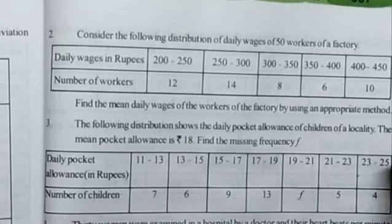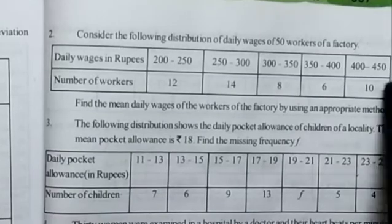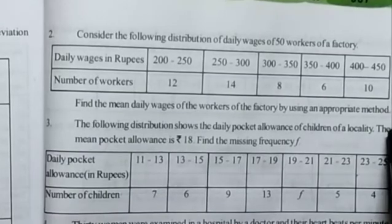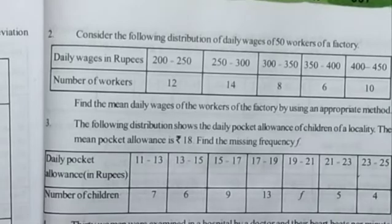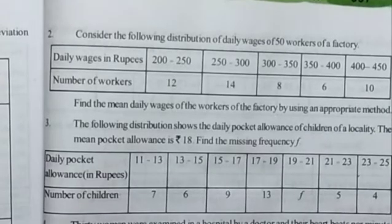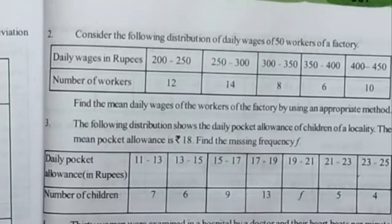We have three types of methods to find the mean. They are: first, the direct mean method; second, the assumed mean method; and third, the step deviation method.